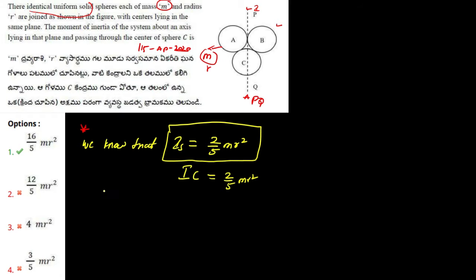Now if I consider sphere A, that is this one, and sphere B, that is this one, these two are identical. Plus to get the total moment of inertia I have to add all these spheres. This is C plus A plus B. Now I C is 2 upon 5 M R square, we know that is I sphere.